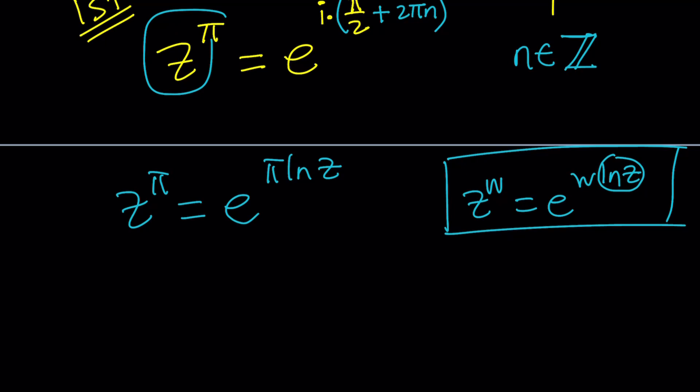So let's go ahead and replace z to the π with e to the power π ln z and set it equal to e to the power i times π over 2 plus 2π n. Awesome. N is an integer.